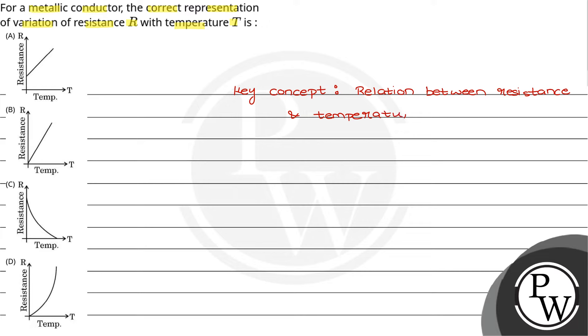So in this case, the resistance R, if I write resistance R, it is represented in terms of R₀(1 + αT + βT²). Here there will be beta, another constant. Alpha and beta are constants, R₀ is also a constant, and T is temperature.